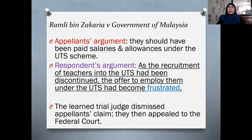The teachers were not happy with the new scheme and wanted the old UTS scheme, so they brought the case to court. Their argument was that they should have been paid salaries and allowances under the UTS scheme as stated in their contracts. The Government of Malaysia argued that, since recruitment of teachers into the UTS had been discontinued, the offer to employ them under the UTS had become frustrated.